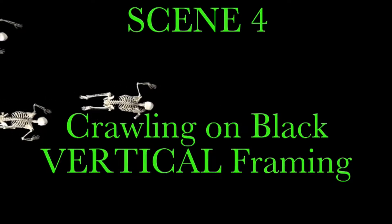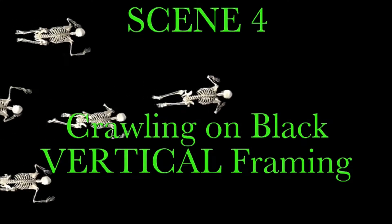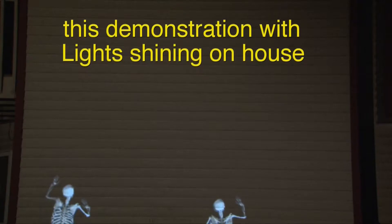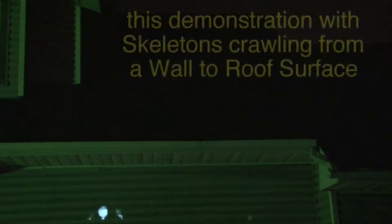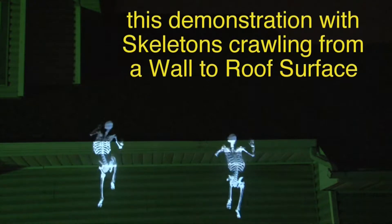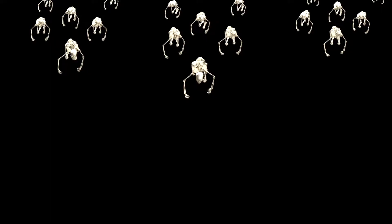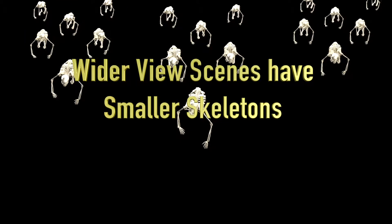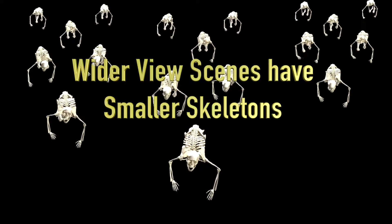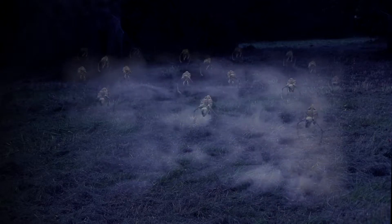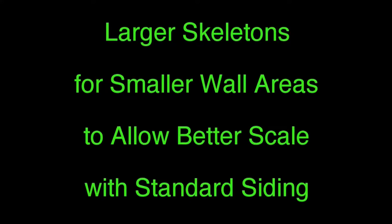Scenes are repeated with fewer skeletons. If you are using 1500 to 3000 lumen projectors, you can project smaller groups of skeletons on interior walls, or smaller walls and garage doors, giving your audience a real treat. In this visual effects series, the effects scenes for the largest projection contain the smallest size skeletons and more of them, while the smallest image contains the largest skeletons and not as many.